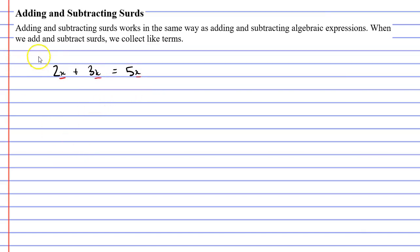So how does this relate to surds? Let's say we had 2 root 7 plus 3 root 7. Once again, we have like terms. The reason they're like terms is because they have the same surd, root 7. So we can simply add the coefficients: 2 plus 3 is 5, and the surd remains the same — it remains as root 7.